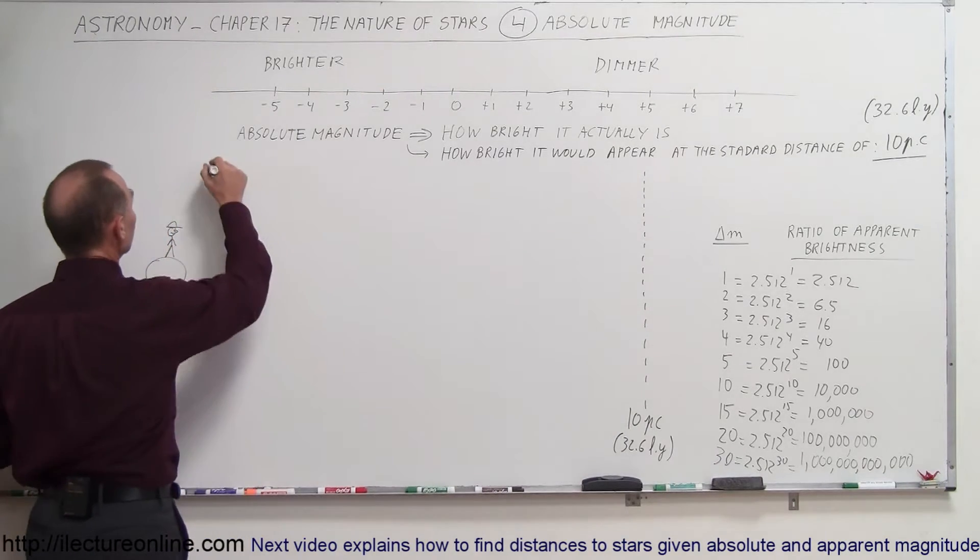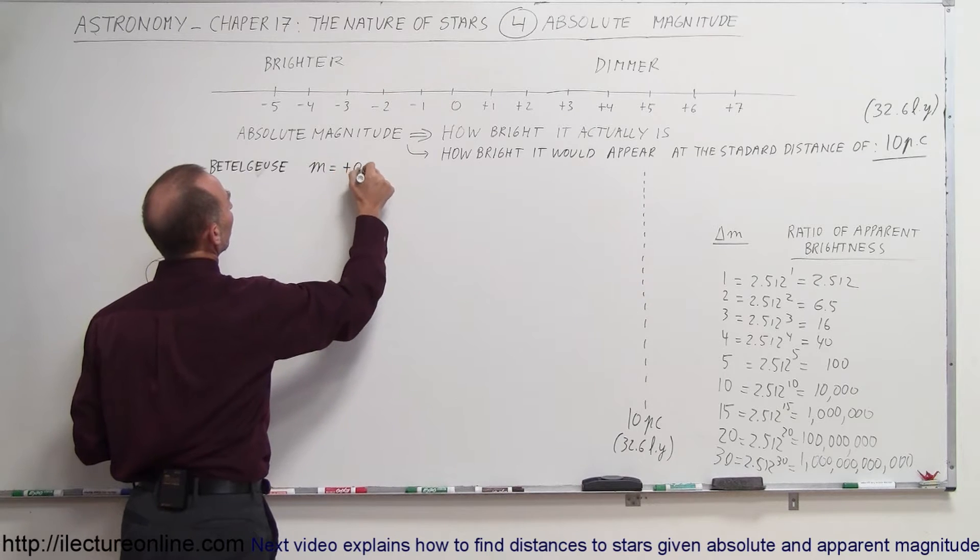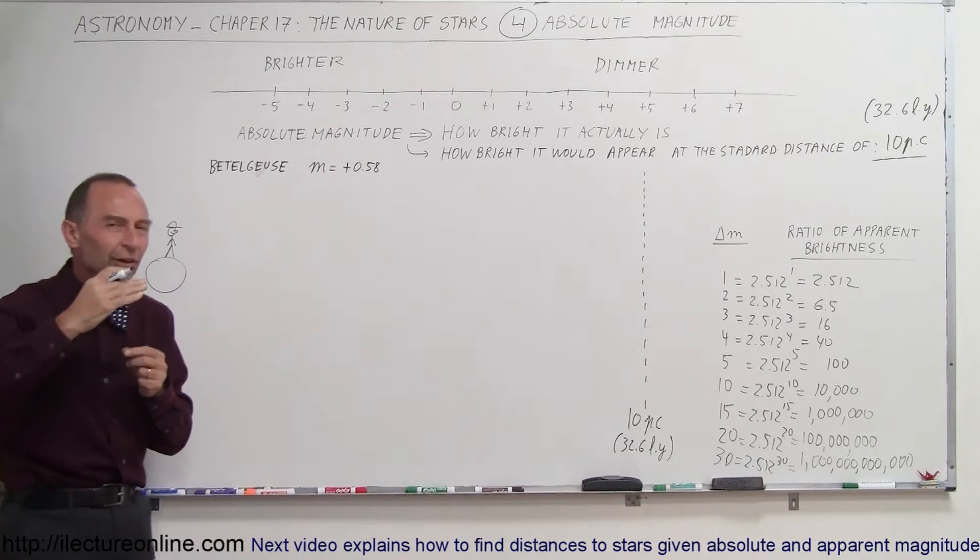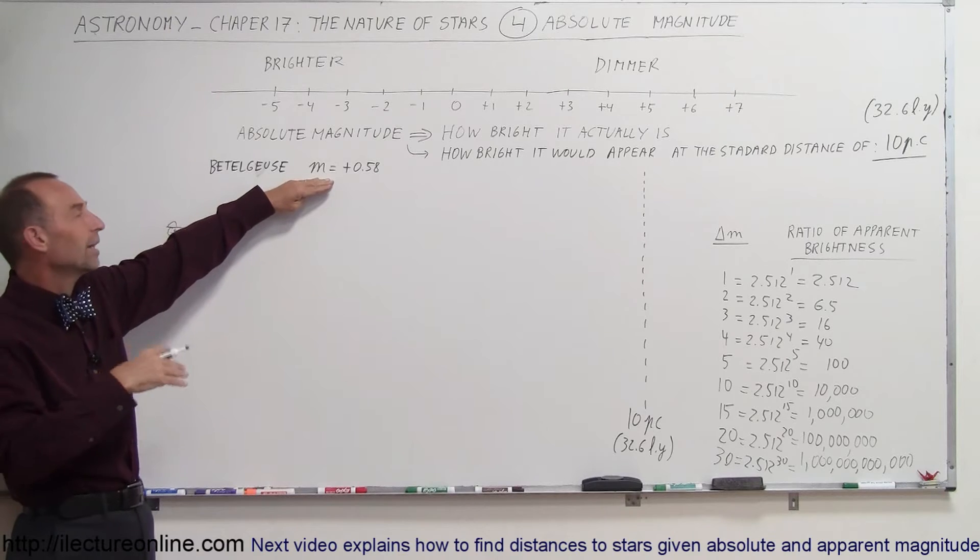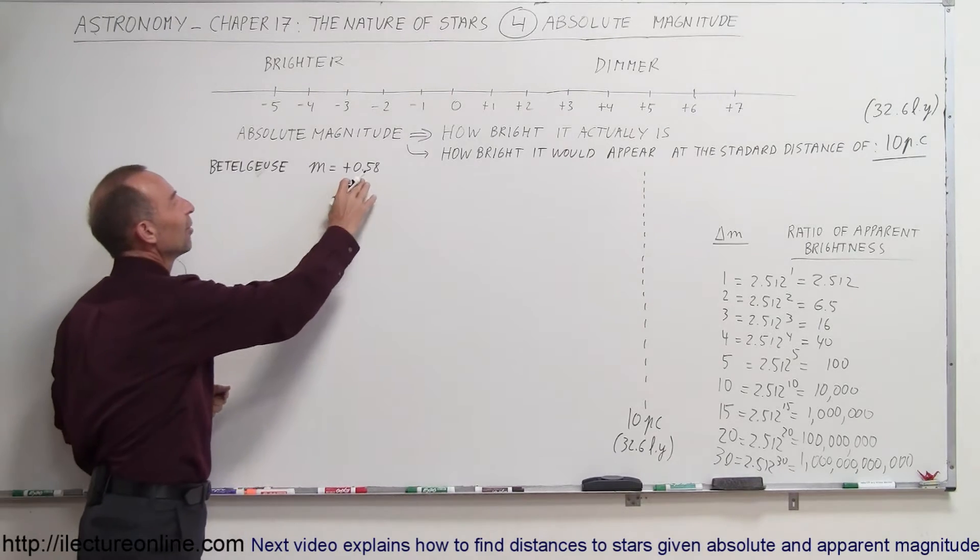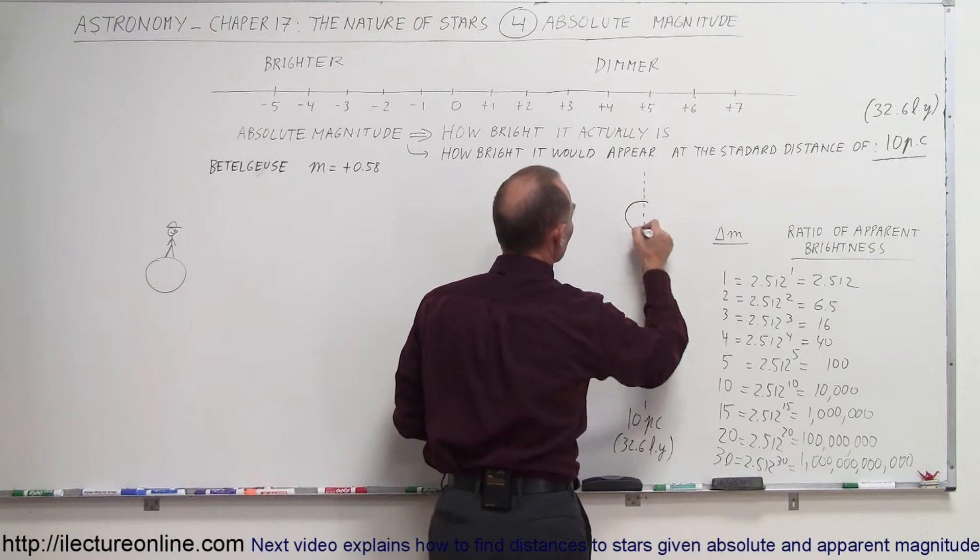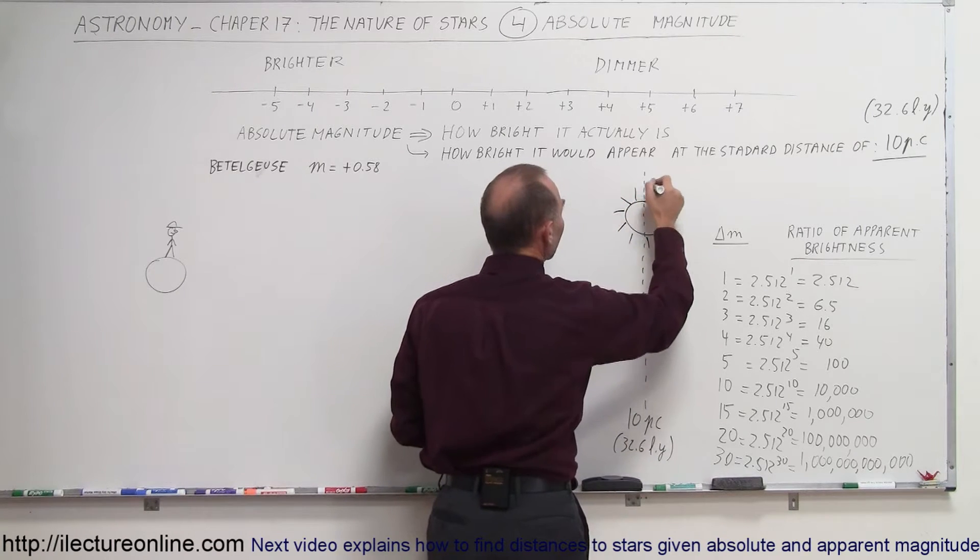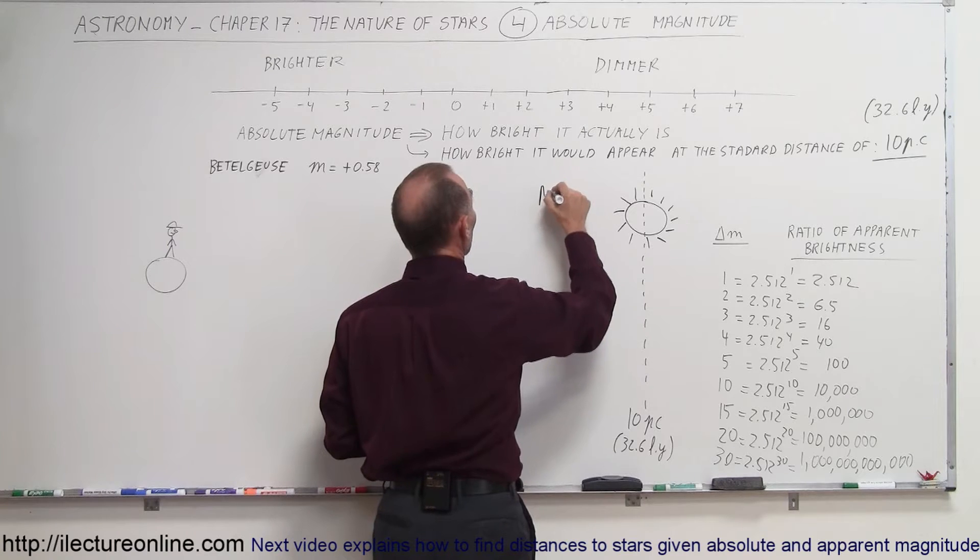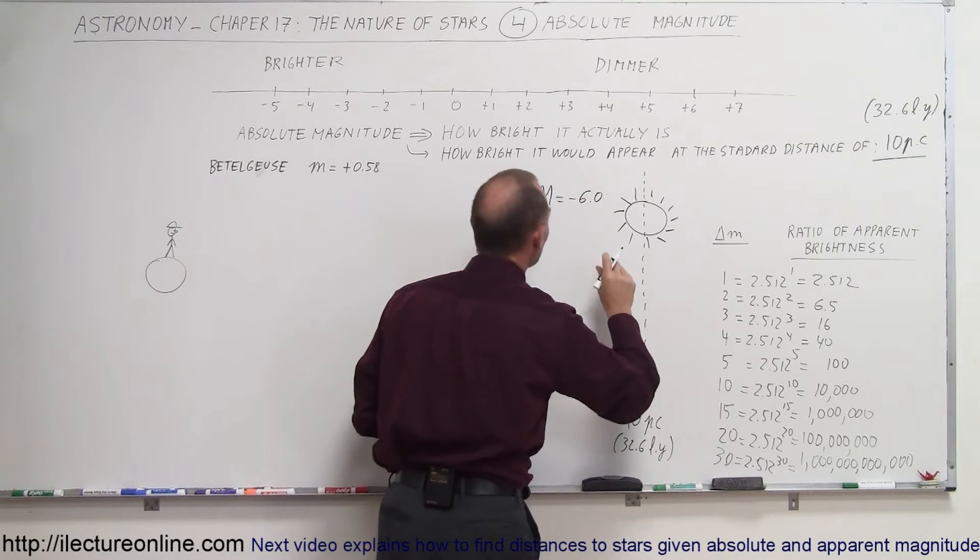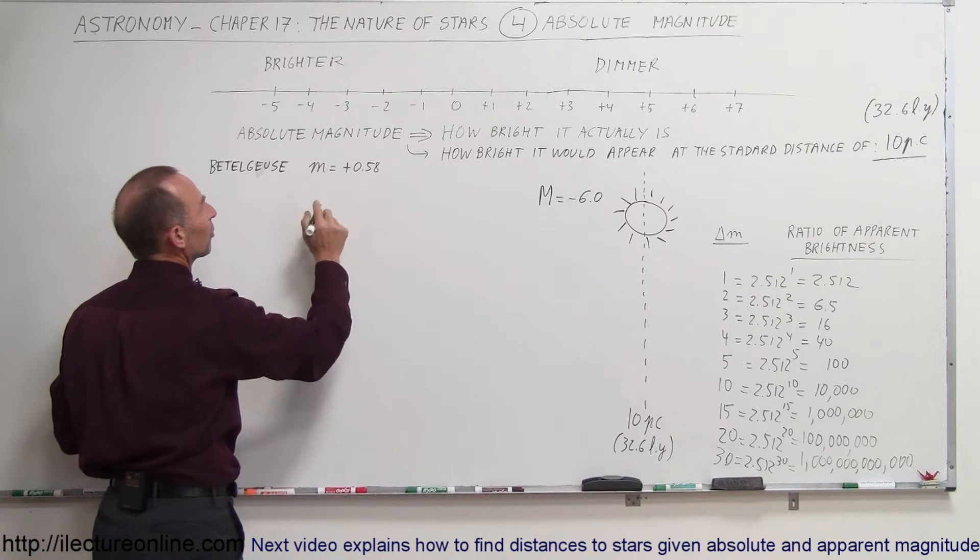So for example, we have the star Betelgeuse, and it has an apparent magnitude equal to plus 0.58. Actually, Betelgeuse varies a little bit in brightness because it's kind of a variable star, but the average apparent magnitude is plus 0.58. Now, what would happen if we took Betelgeuse and placed it at a distance of 10 parsecs away? Here's Betelgeuse, and it turns out, if we placed it there, the apparent magnitude would be minus 6, which makes it the absolute magnitude. So, big M is equal to minus 6.0 for Betelgeuse at a distance of 10 parsecs, and the apparent magnitude, small m, is equal to 0.58.